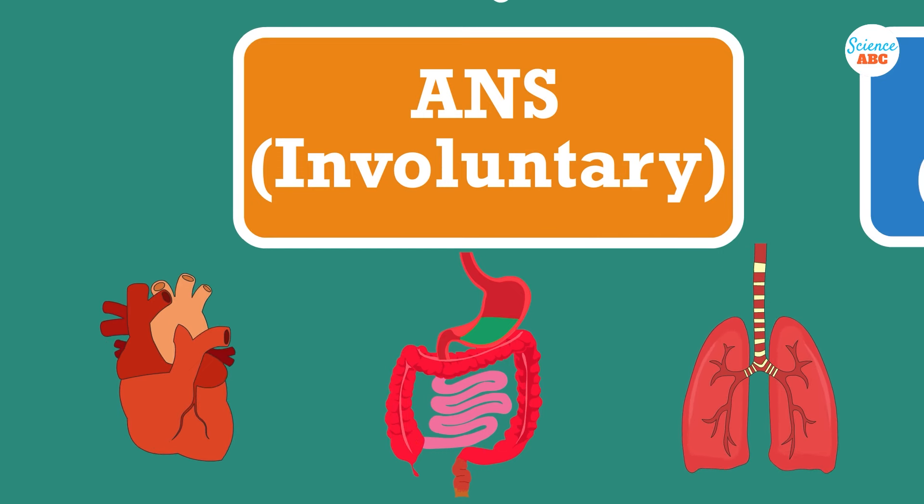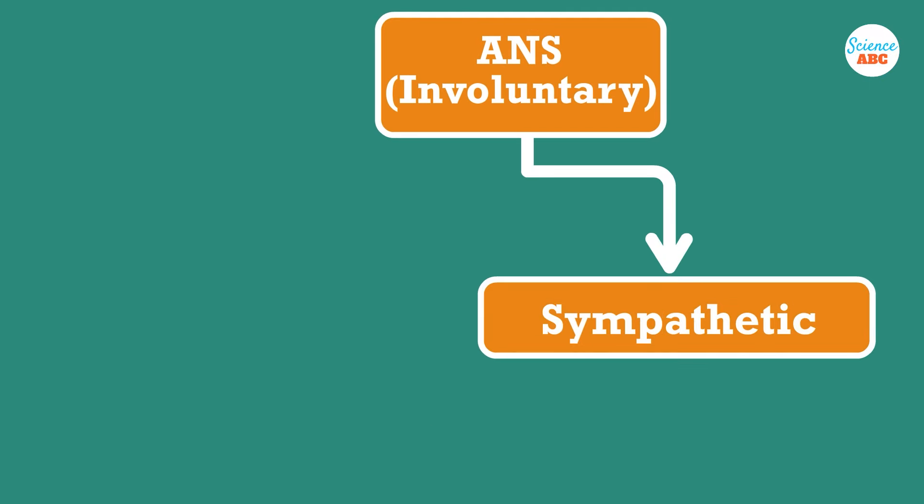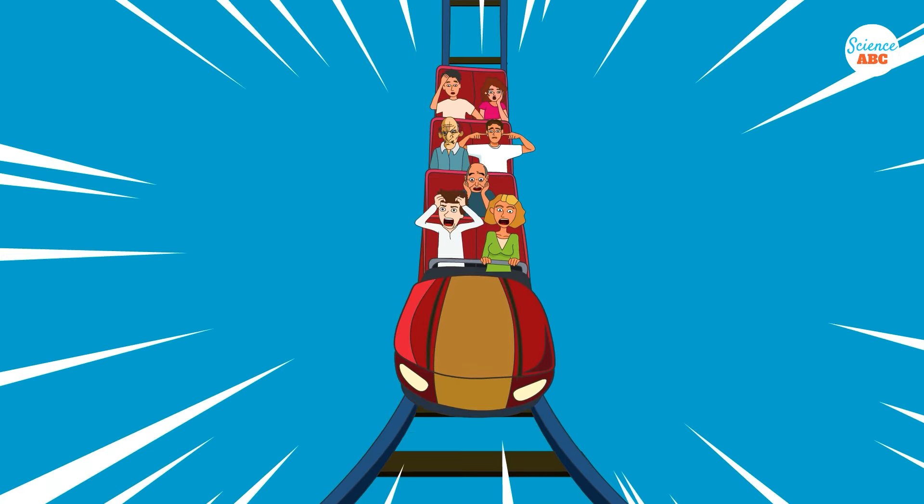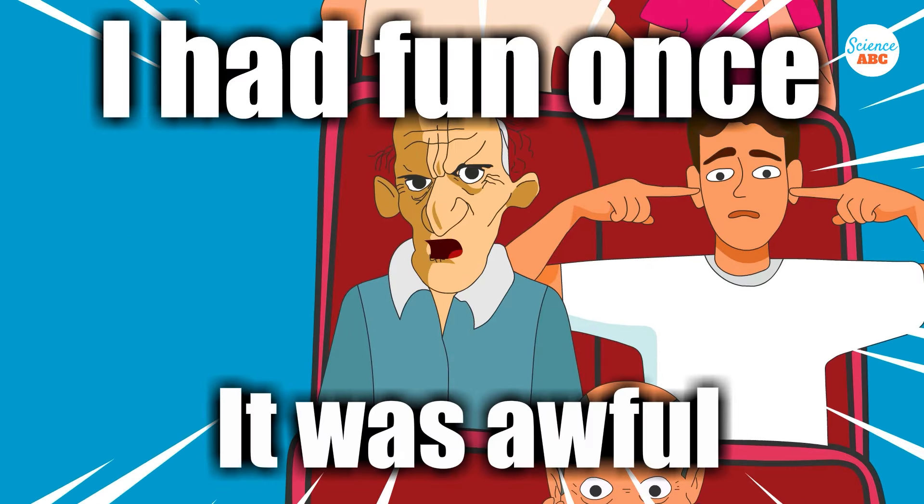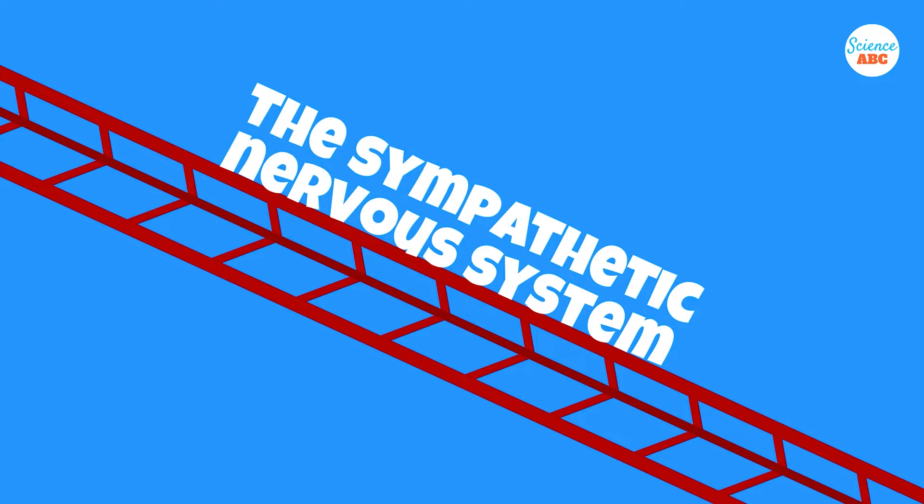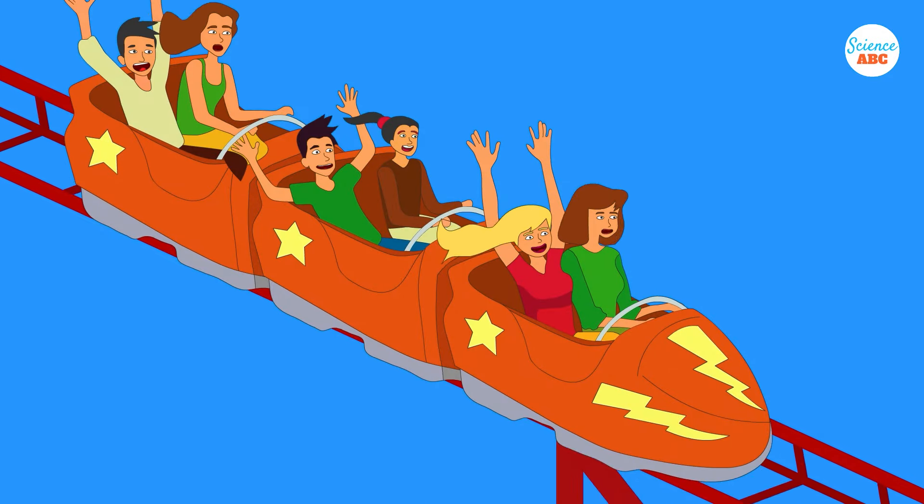We're not done yet. The autonomic nervous system is further divided into the sympathetic nervous system and the parasympathetic nervous system. You've experienced the effects of these two if you've ever been on a roller coaster, and then sat down to catch your breath. The sympathetic nervous system is central to your fight-or-flight response, increasing your heart rate, your breathing, and making your muscles contract.